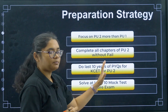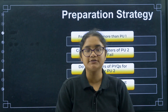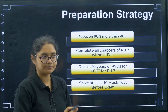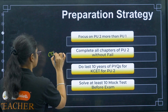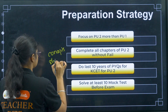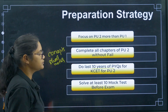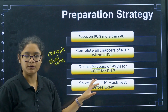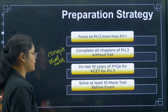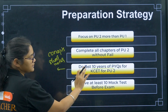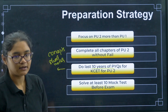Complete all chapters of PU2 without fail — there is no option here. Please do each and every chapter in the syllabus. What exactly do you have to do? Make concepts clear, make short notes, do at least last 10 years of KSet PU2 papers for all chapters, and solve at least 10 mock tests before the exam. In our channel, all PU2 chapter PYQs for KSet are already covered.